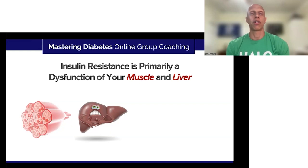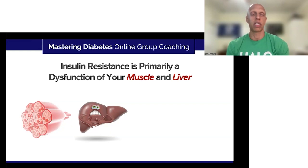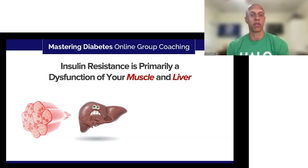As I mentioned earlier, insulin resistance is a condition that primarily affects your liver and your muscle — those are the two target organs. But in addition to that, it also affects your pancreas and can affect your brain.